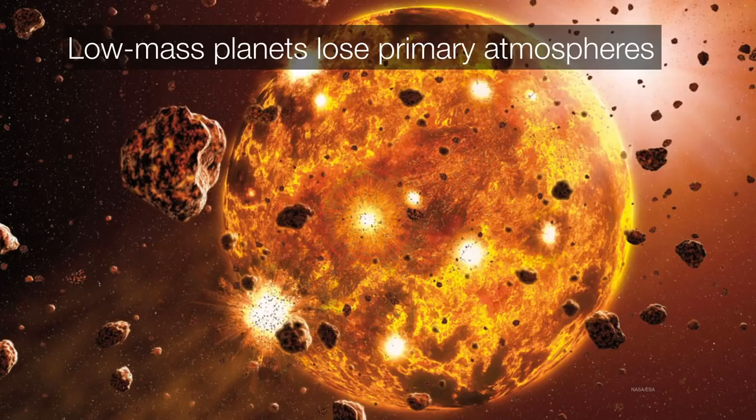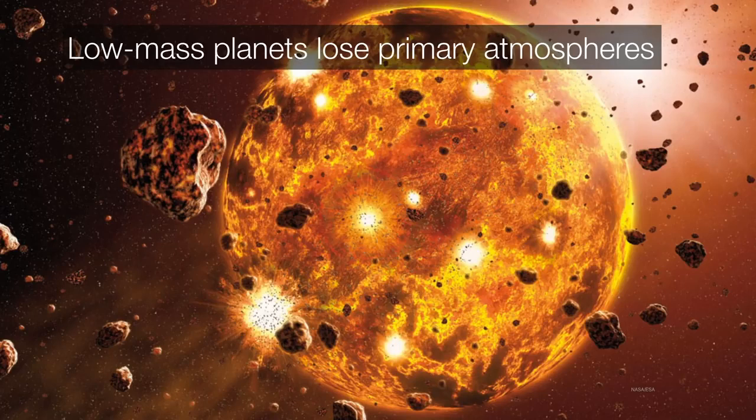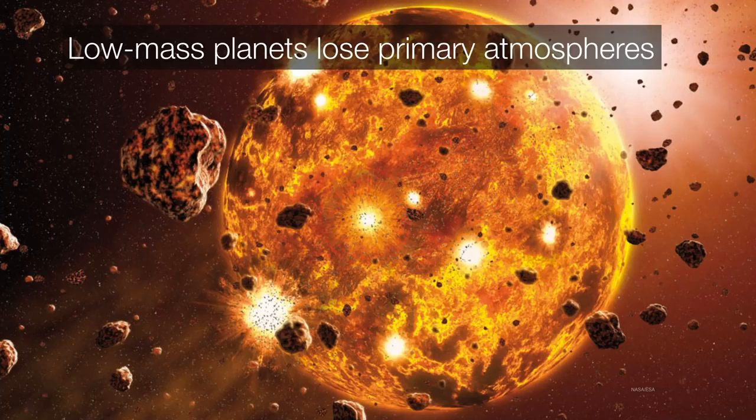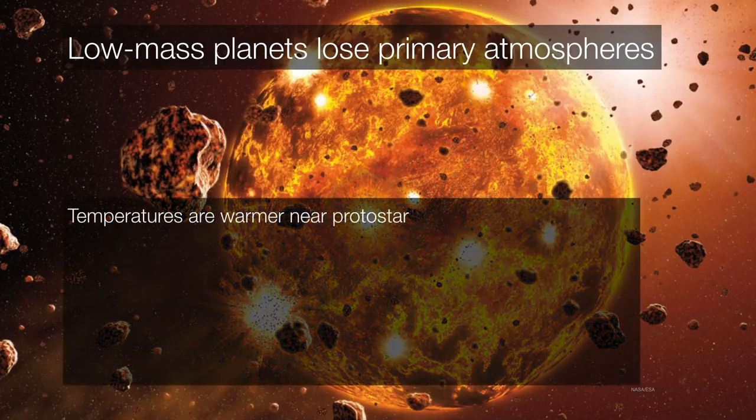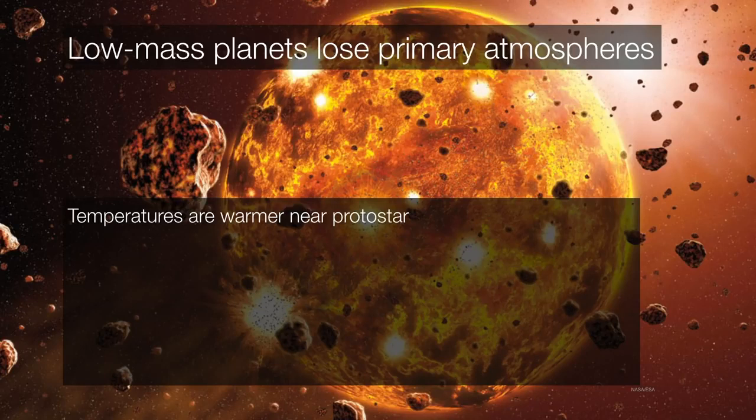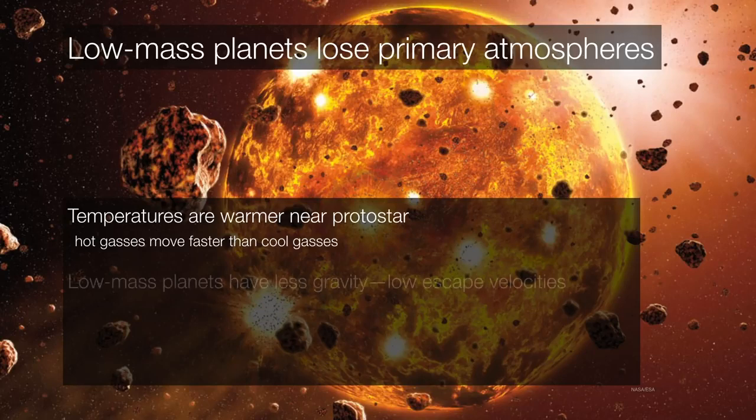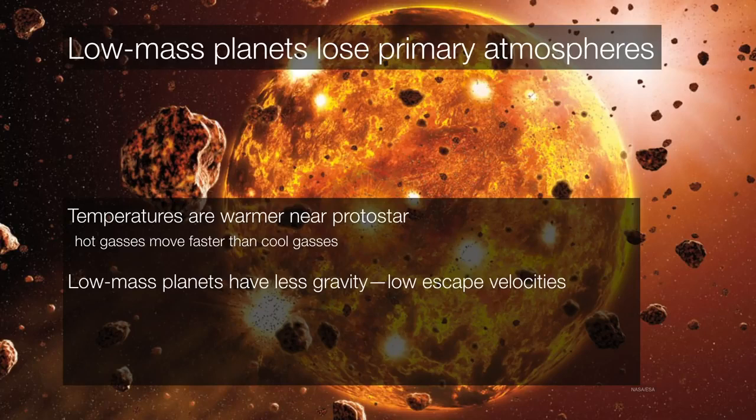However, in the inner solar system, where we have lower mass proto-planets, it's a much different situation. They are unable to hold on to those primary atmospheres. Remember, the temperatures are much warmer near the protostar, or in this case, the proto-sun. And hot gases are going to always move faster than cold gases. So if you have a low-mass planet with low-mass gases, they can easily achieve escape velocity from those gases. Remember, the hotter they are, the faster they're going to be moving.